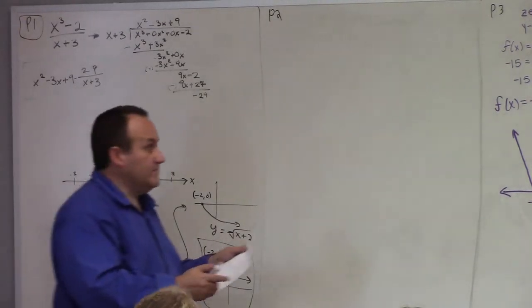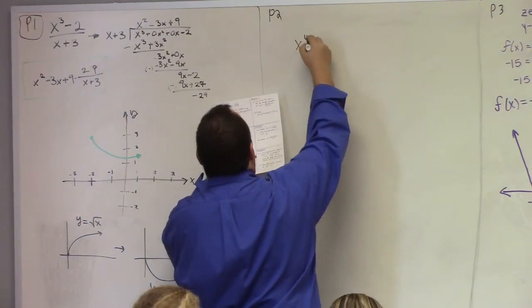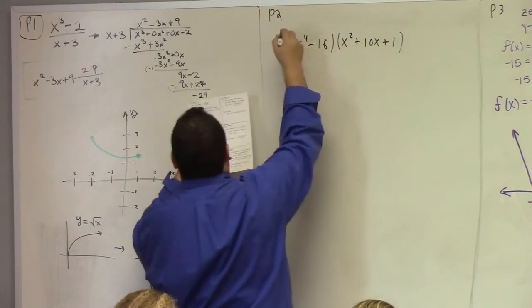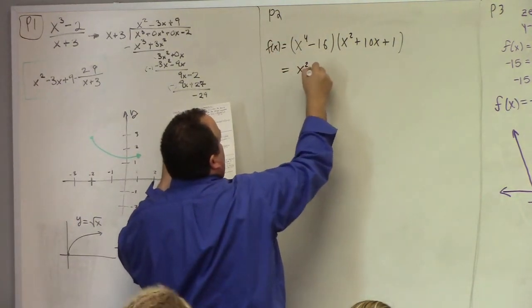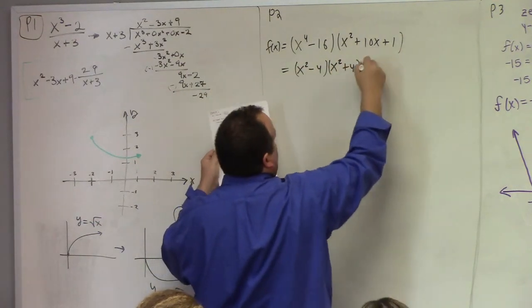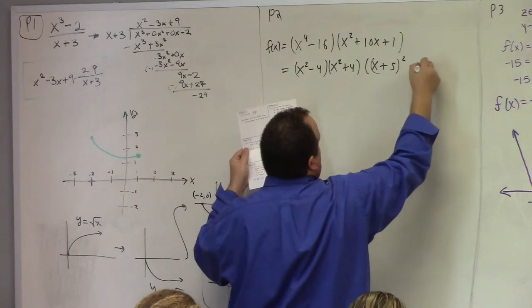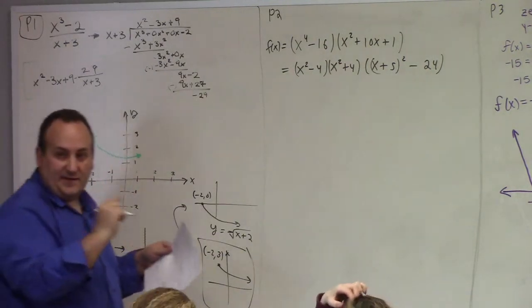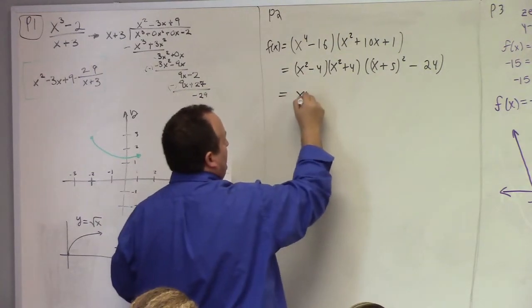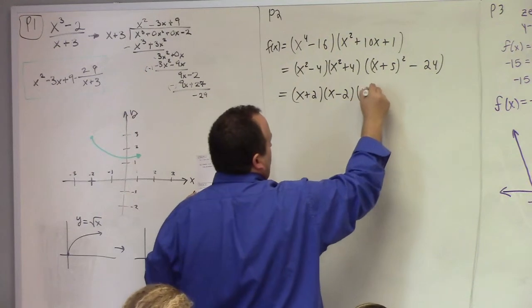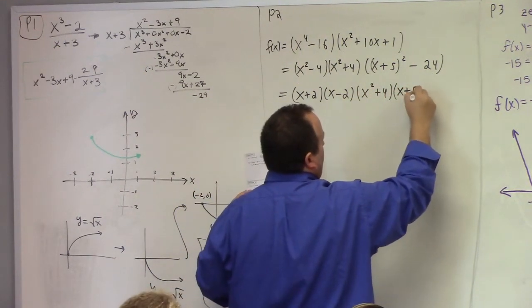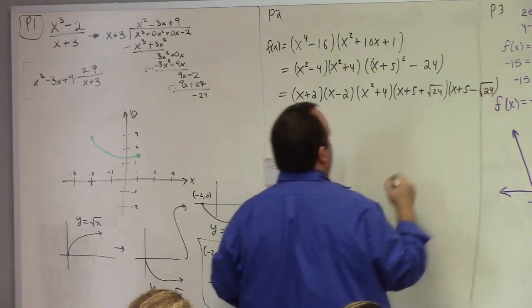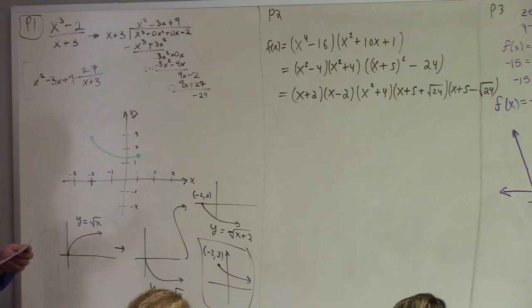Problem 2 didn't get up to the board, but let me do it. So here we have, we're factoring x to the 4th minus 16 times x squared plus 10x plus 1. How do we factor this? You guys tell me that's x squared minus 4, x squared plus 4. Complete the square on that thing. x plus 5 quantity squared minus 24. So now the group that was doing this got that far. And actually they got a little bit further because they figured out that that's actually x plus 2 times x minus 2 times x squared plus 4 times x plus 5 plus the square root of 24, x plus 5 minus square root of 24. There you go. Now it is factored completely over R.